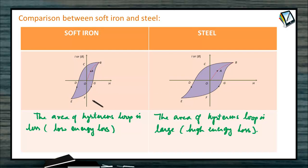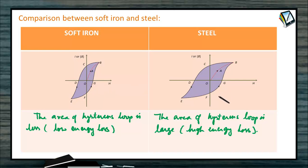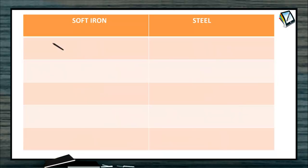Magnetic permeability is high for soft iron and less for steel. Intensity of magnetization (I) and magnetic susceptibility (xi) are both high for soft iron and both low for steel. Soft iron can be magnetized and demagnetized easily, whereas demagnetization of steel is not easy. Therefore, soft iron is used in dynamos, transformers, electromagnets, tape recorders, etc.